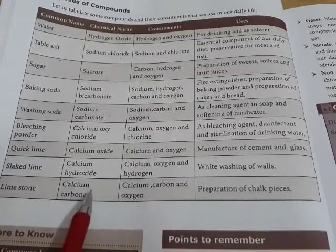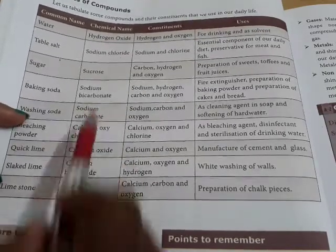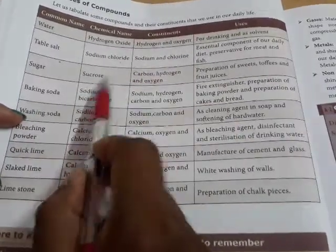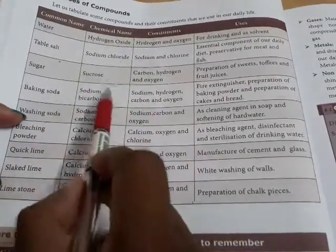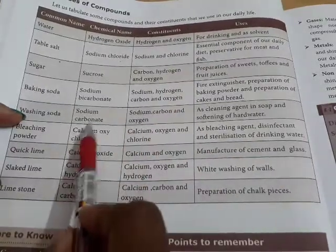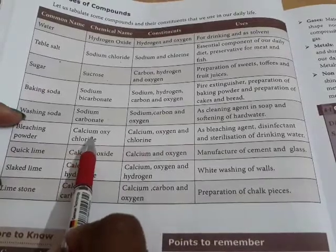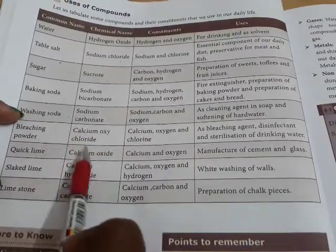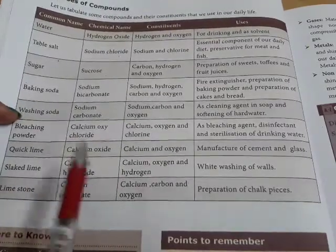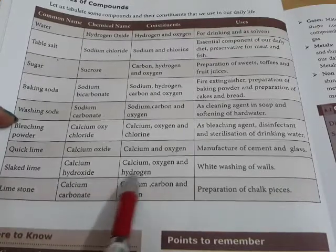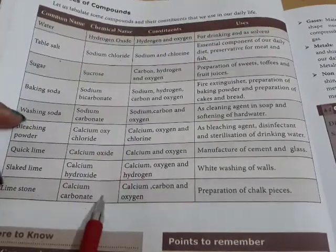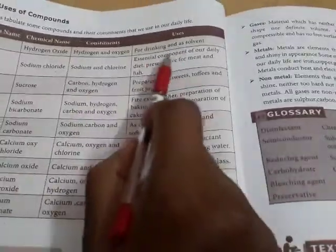The elements in these compounds are: sodium chloride contains sodium and chlorine; sucrose contains carbon, hydrogen, and oxygen; sodium bicarbonate contains sodium, hydrogen, carbon, and oxygen; calcium oxide contains calcium; calcium oxychloride contains calcium and chlorine; calcium hydroxide contains calcium, hydrogen, and oxygen; calcium carbonate contains calcium, carbon, and oxygen.